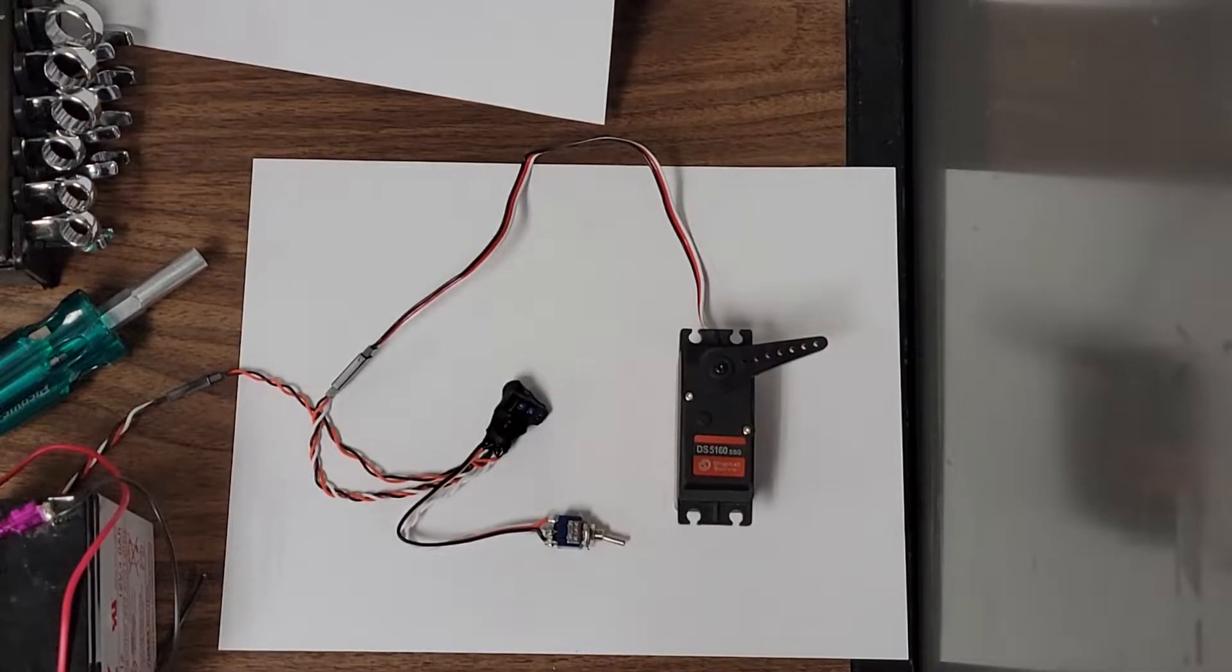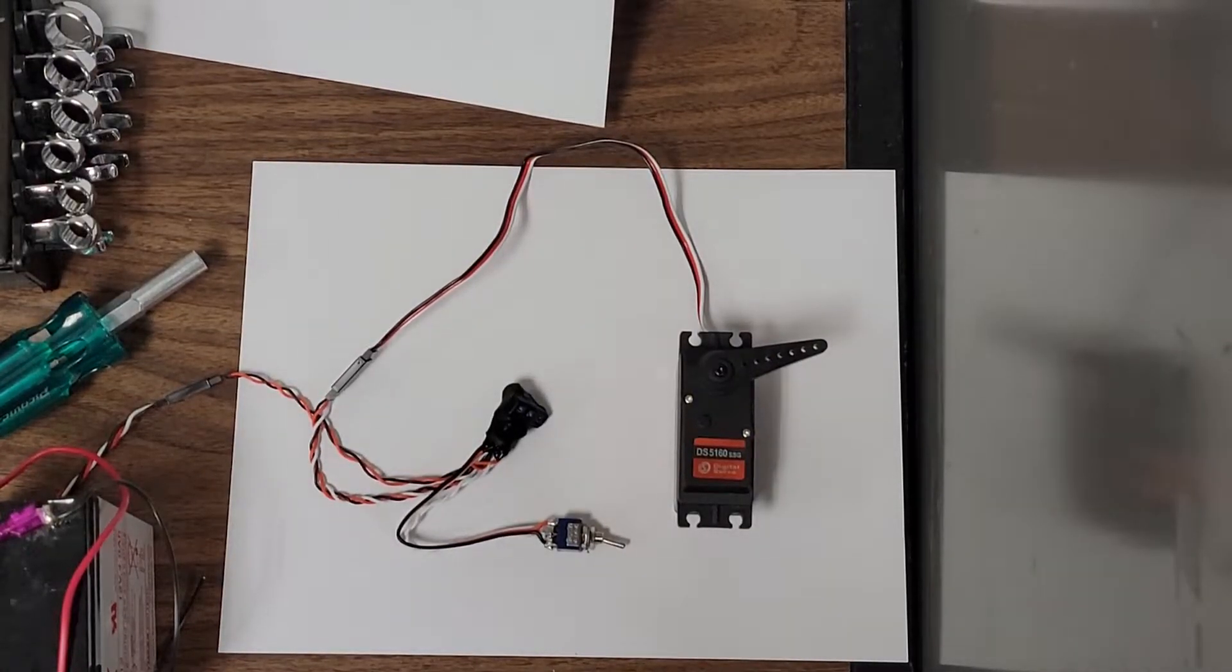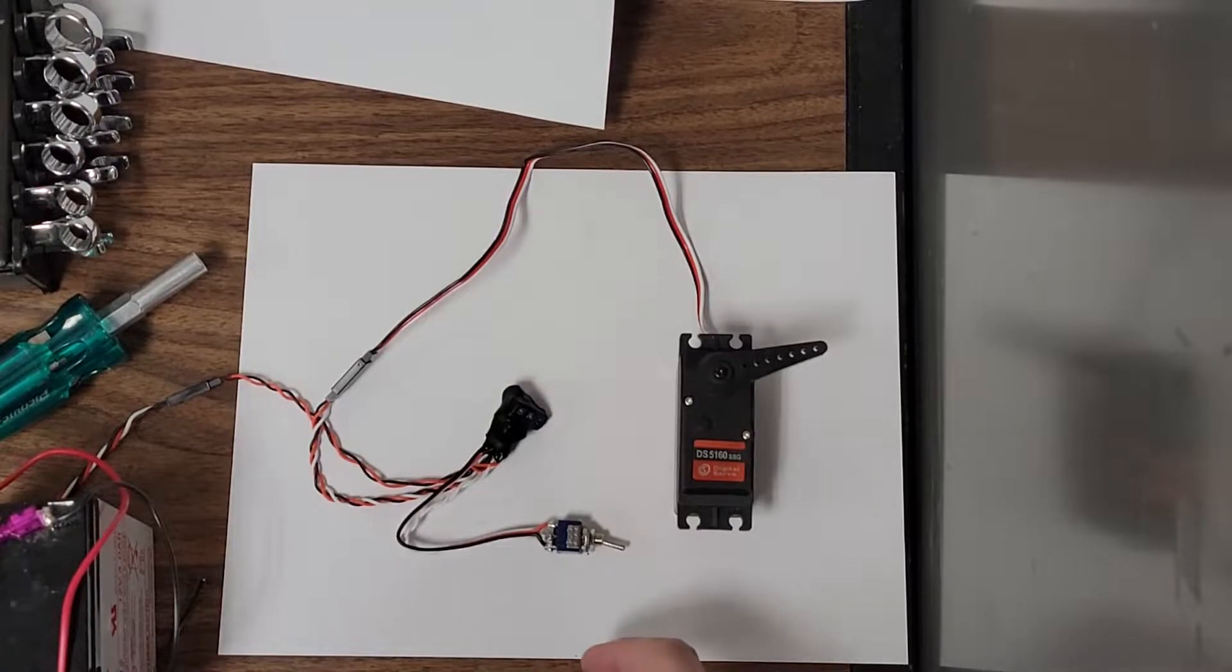So here's your servo positioner hooked up to a three position toggle switch. The center is the off position so no power goes to the controller or the servo when it's in the center position.